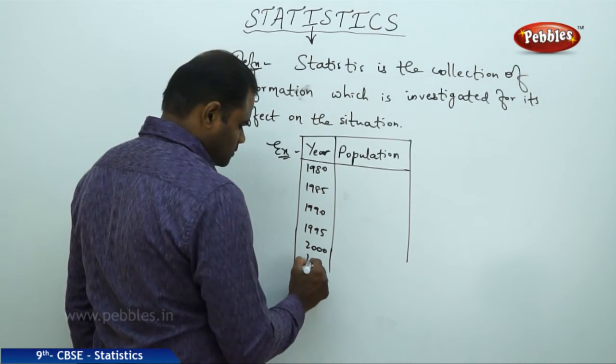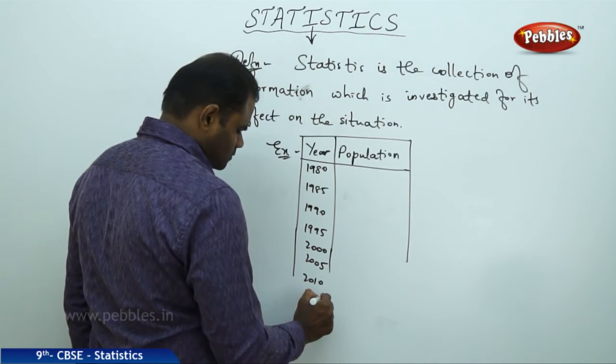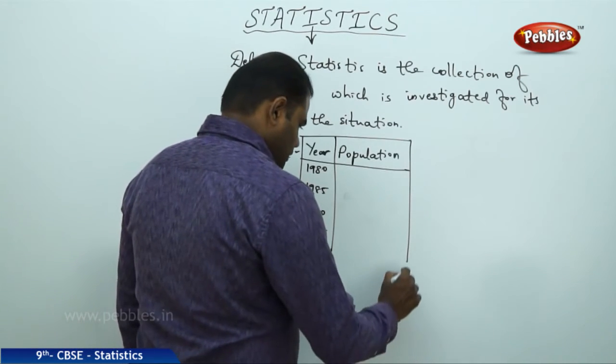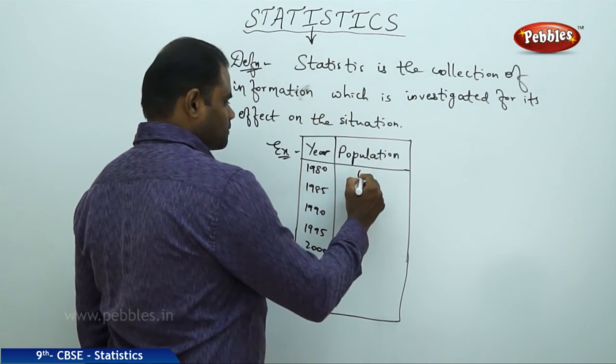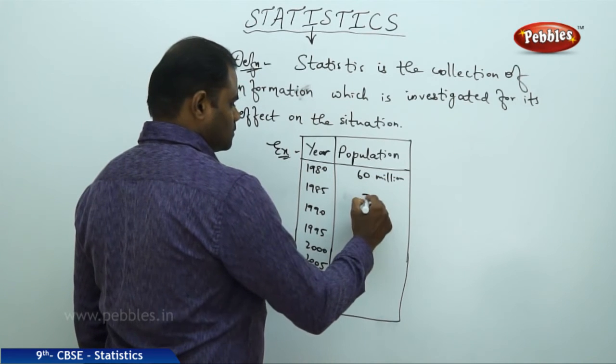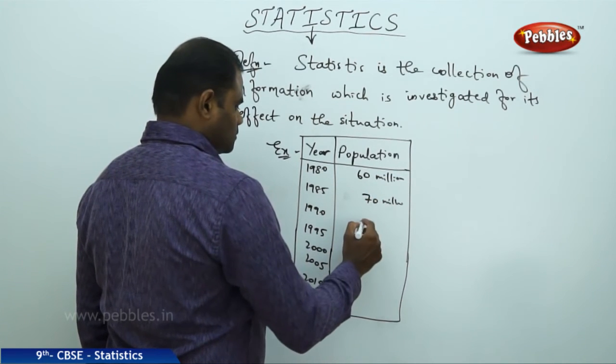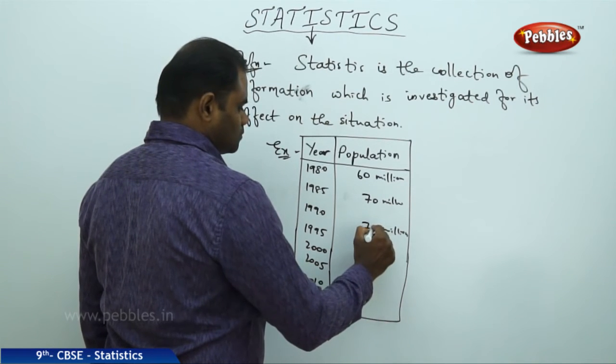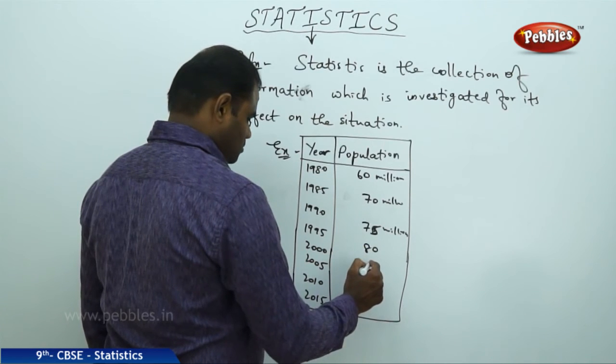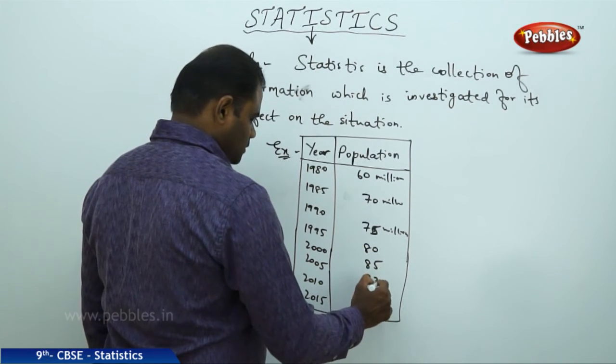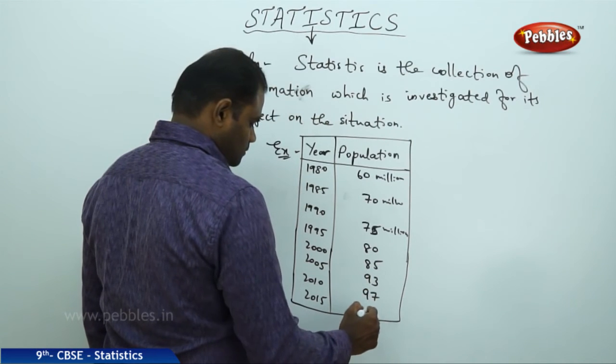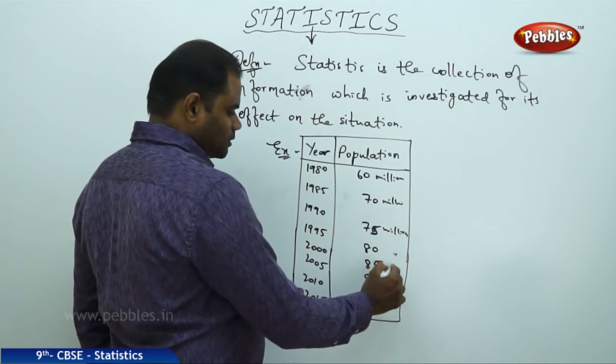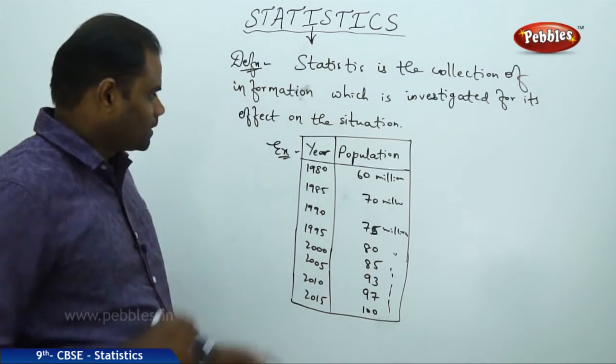Let me say the population here is 60 million in 1980, 70 million in 1985, 75 million in 1990, 80 million in 1995, 85 million in 2000, 93 million in 2005, 97 million in 2010, and 100 million in 2015. This is all about the population of the country every five years.